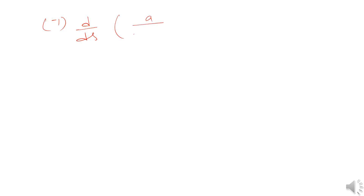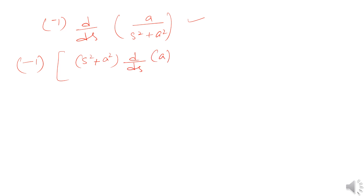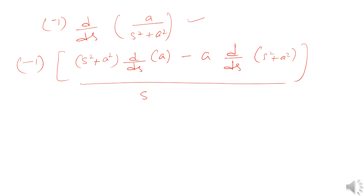We have −1 times d/ds of a/(s² + a²). Applying the quotient rule: this gives (s² + a²) times the derivative of a, minus a times the derivative of (s² + a²), all divided by (s² + a²)².